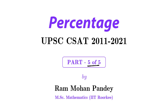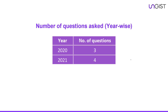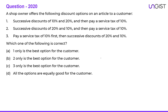Hello dear students, this is the fifth and final part of the topic 'Percentage' in our UPSC CSAT PYQ series. In this video we will discuss questions from 2020 and 2021. In 2020, three questions were asked; in 2021, four questions were asked. In 2019, six questions were asked. You may expect around two to four questions every year from this topic, so it is completely important for CSAT preparation.